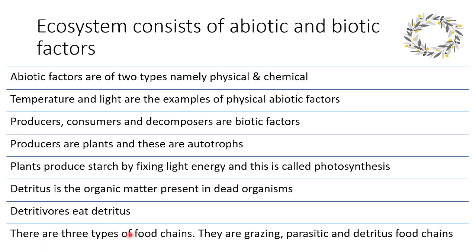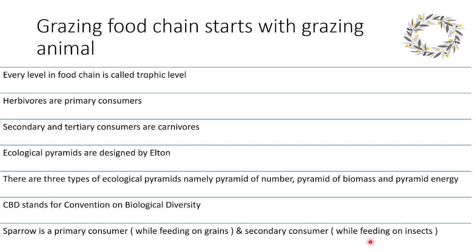There are three types of food chains: grazing, parasitic and detritus food chains. Grazing food chain starts with a grazing animal. Every level in a food chain is called a trophic level. Herbivores are primary consumers. Secondary and tertiary consumers are carnivores.